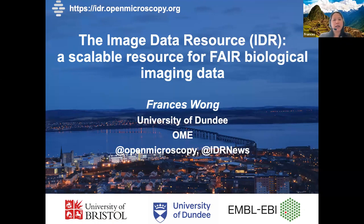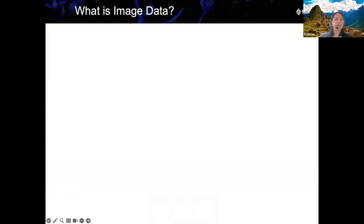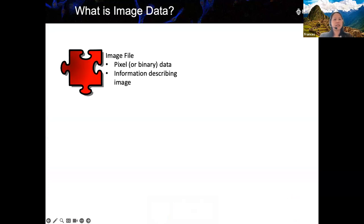I'm aware that not all of you work with image data, so let's start by asking ourselves: what is image data? Image data consists of an image file, which is pixel or binary data. Some image files also contain information describing the image, such as channels, Z-stack planes and time points, and this information is saved within the image file.